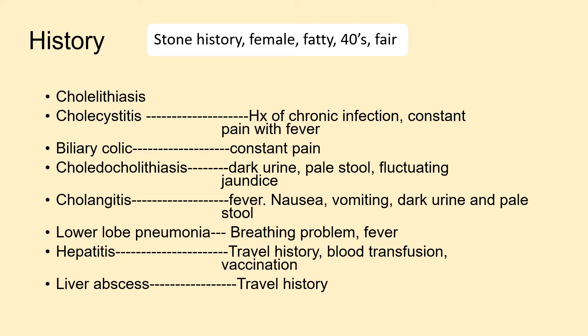In cholangitis the patient might also develop shock. In cases of lower lobe pneumonia there would be breathing problems and fever. In hepatitis, you have to ask for travel history, history of blood transfusion, and vaccination status. In liver abscess, travel history is also important.